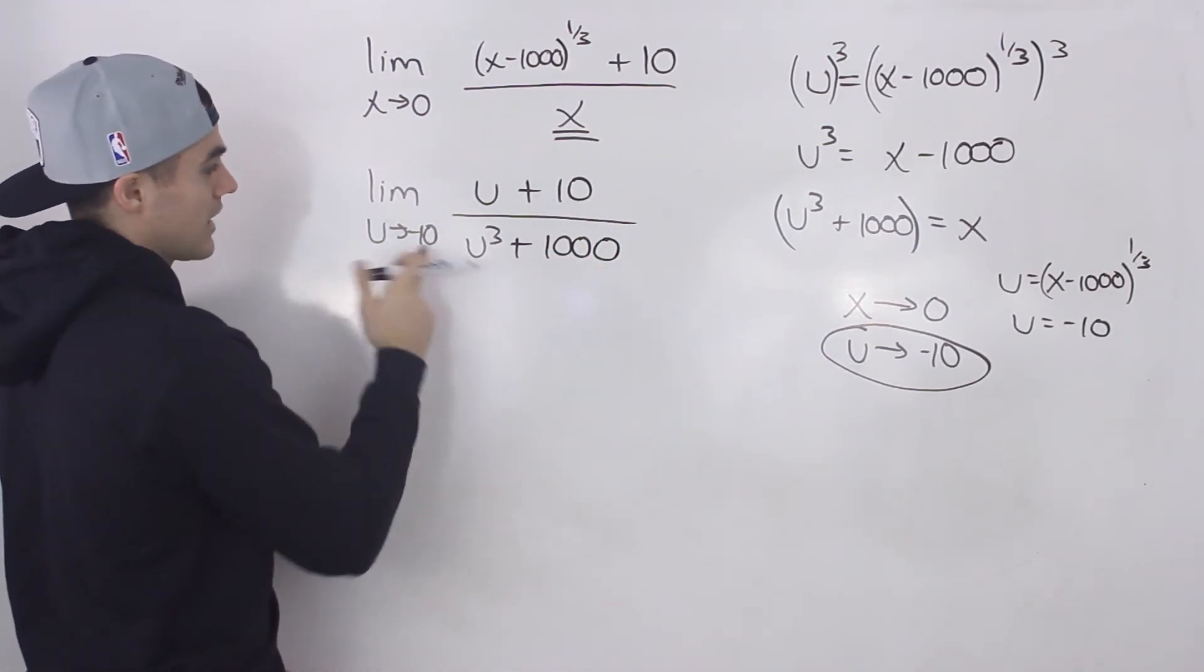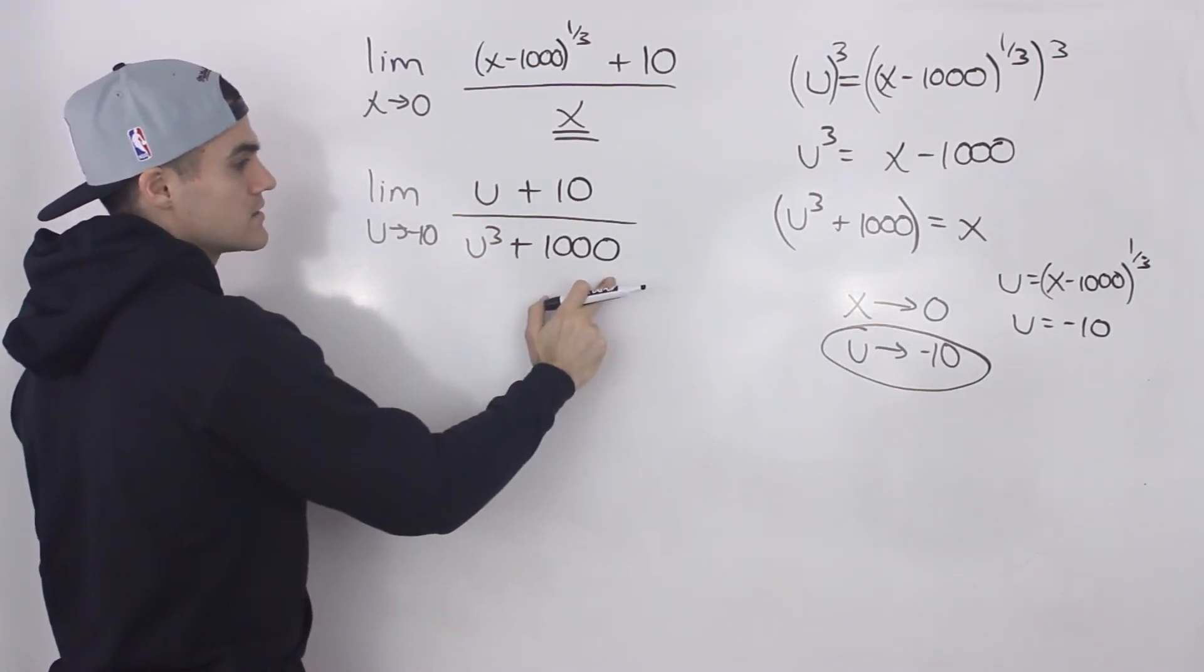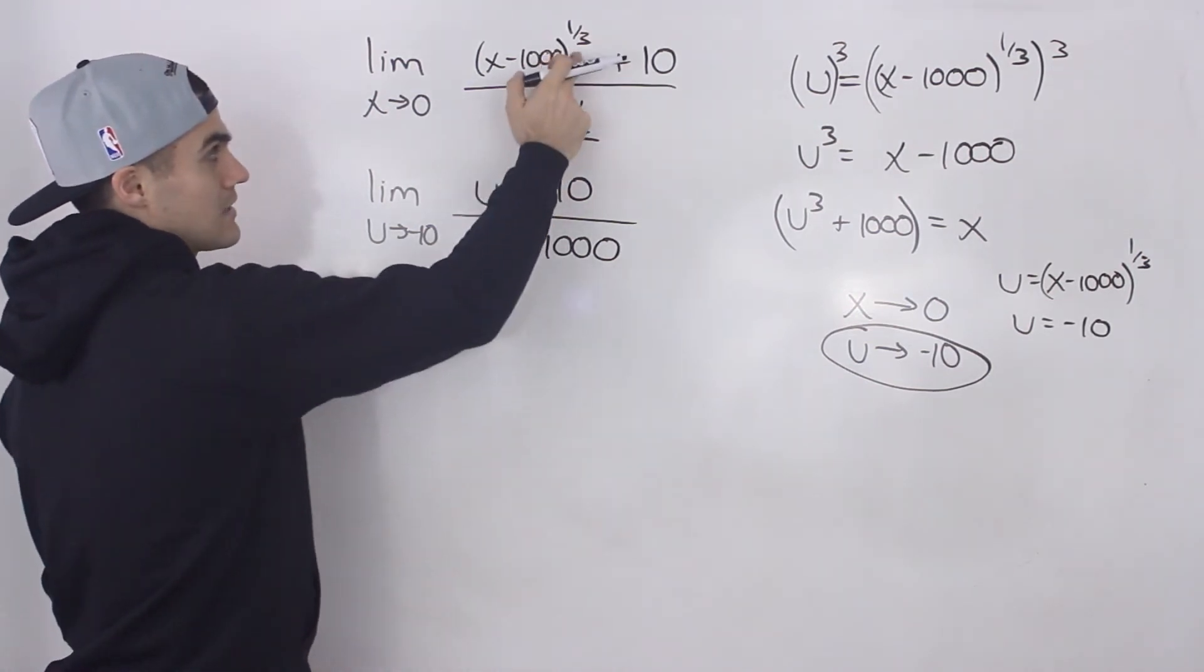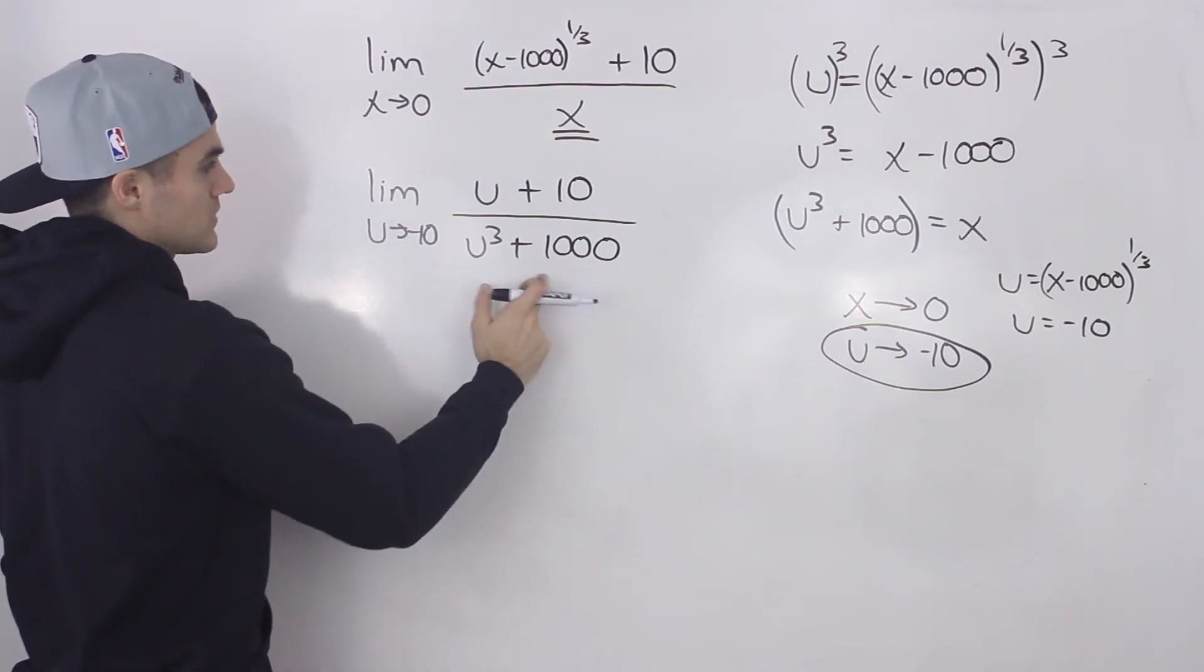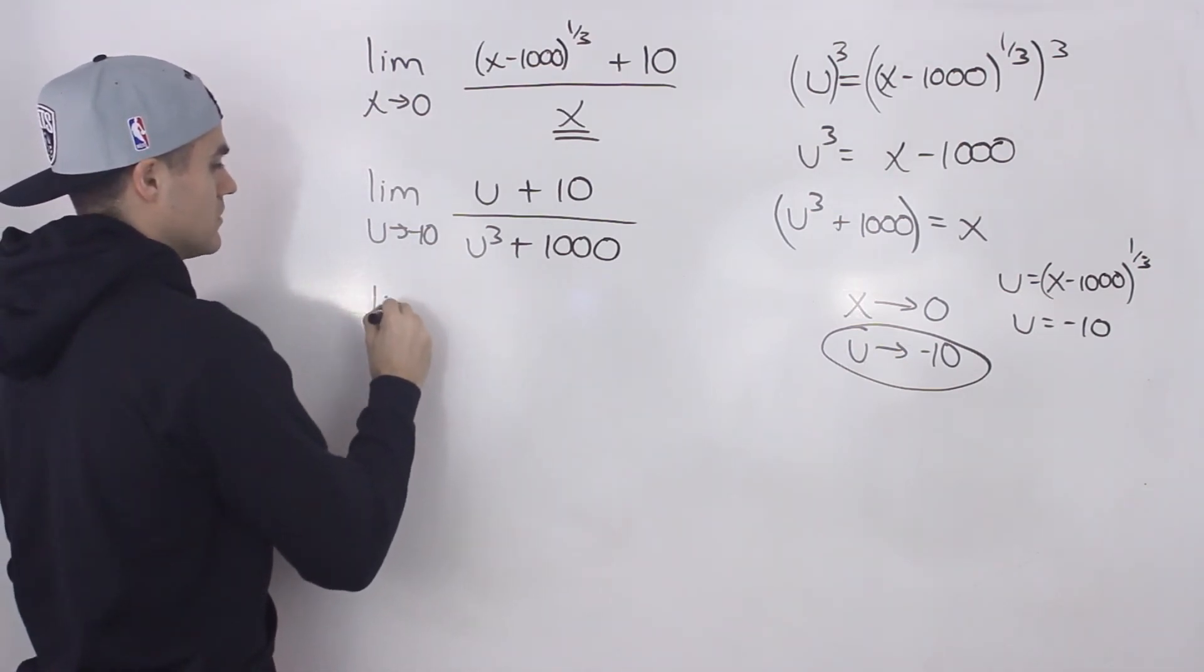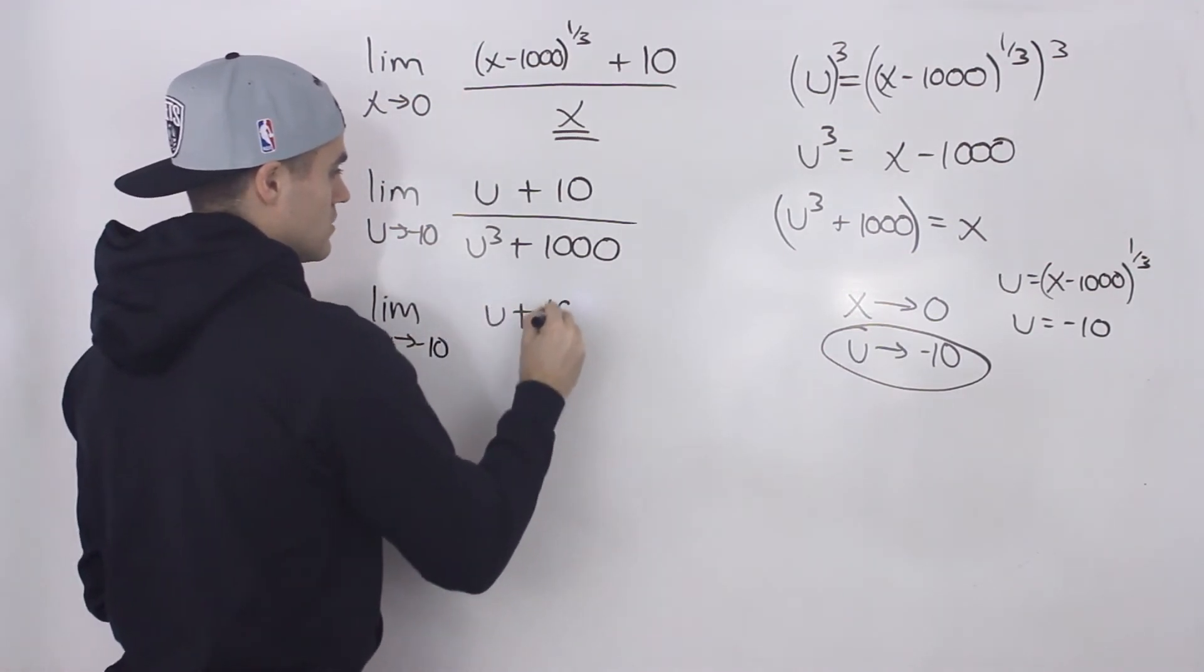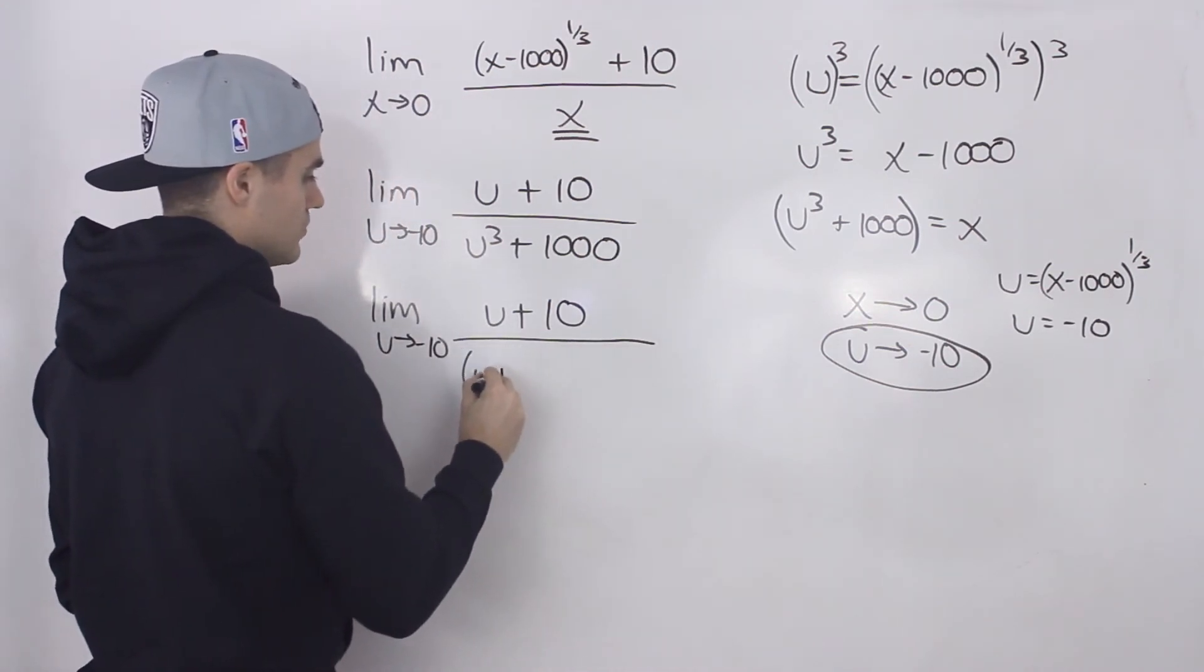Notice that we still can't make a direct substitution. We can't plug in negative 10 because the denominator is going to be 0. But notice now that we're not working with any ugly radicals, and u cubed plus 1,000, that's actually a sum of cubes.